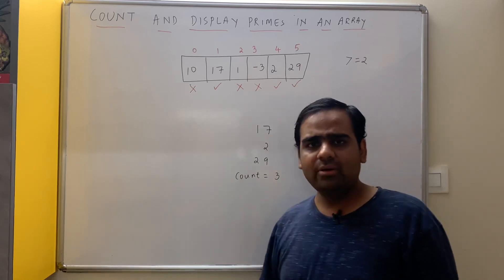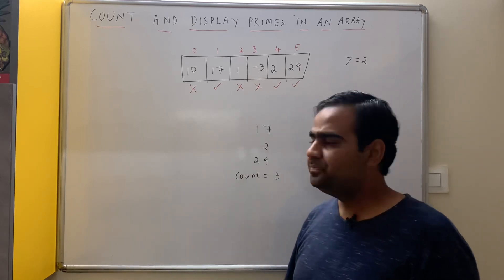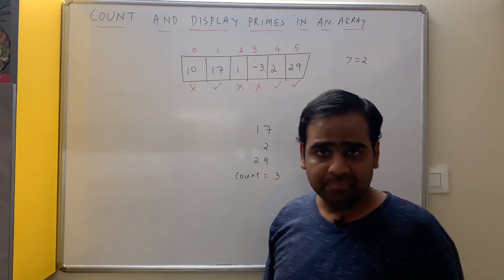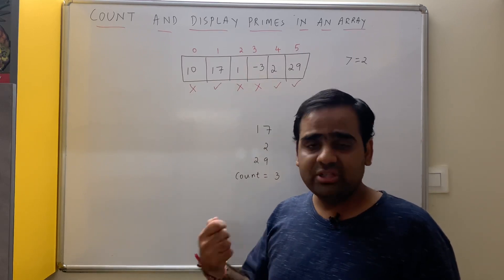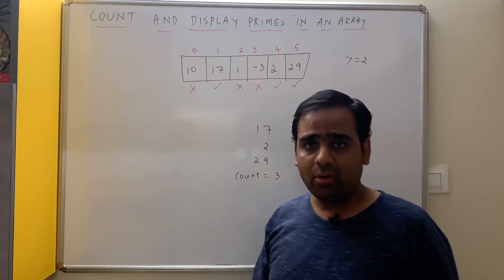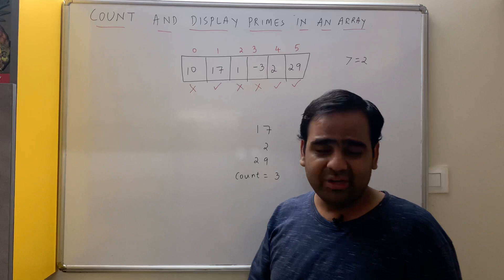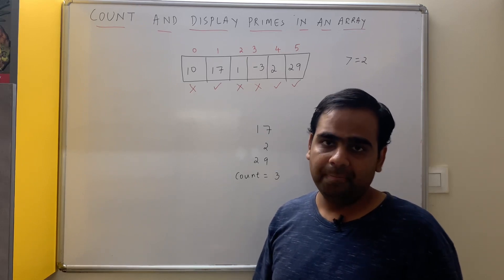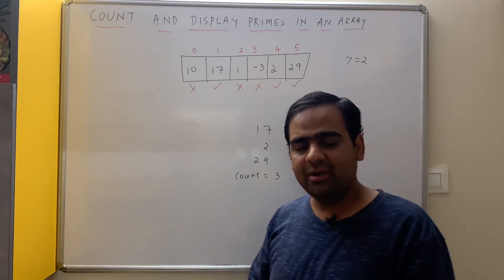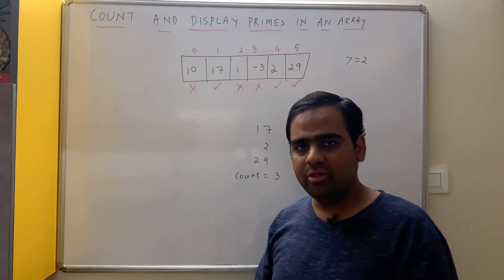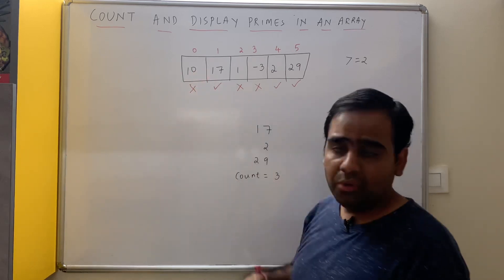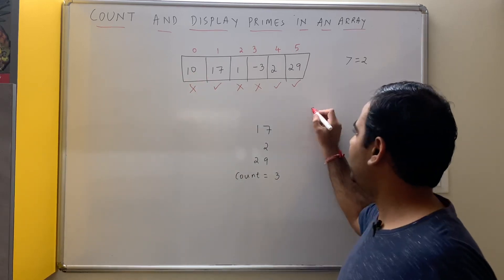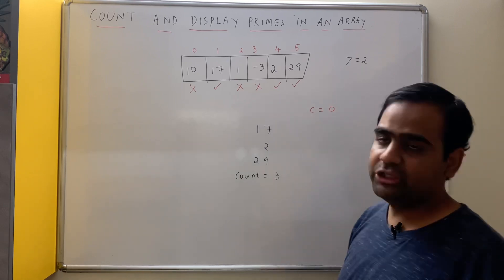How are we going to solve this problem? We take each element — say 10 — and check if it is prime or not. If it is prime, we update the count and display it. Is 10 a prime? No. Therefore we don't display it and the value of count is still 0.